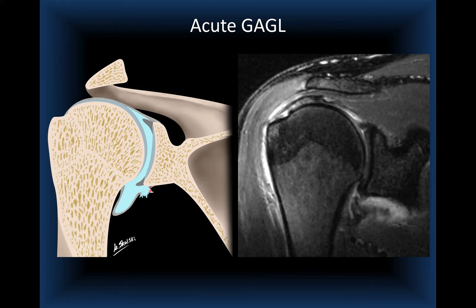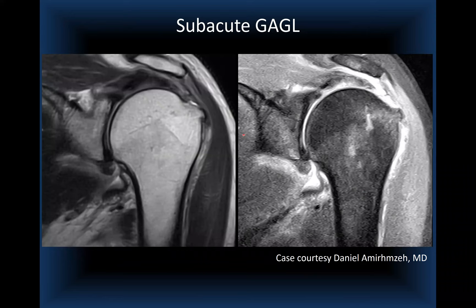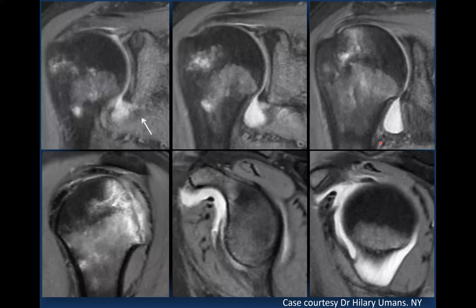A case that was retrospectively a GAGL was initially called a Bankart because the labrum appeared slightly abnormal. The orthopedic surgeon confirmed at repair that everything was fibrosis and granulation tissue from the detached capsule, but the anteroinferior labrum was intact — a true GAGL. A subacute GAGL courtesy of Dr. Aminze shows an intact humeral insertion, with the glenoid insertion as the point of failure and a normal labrum.